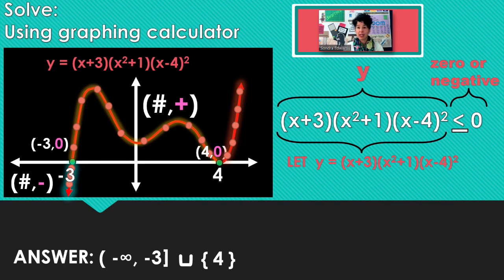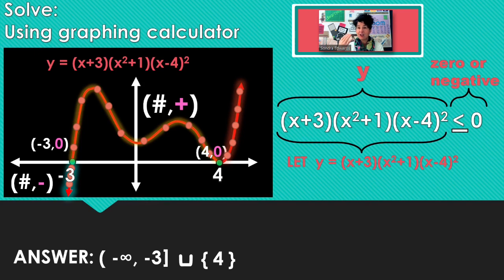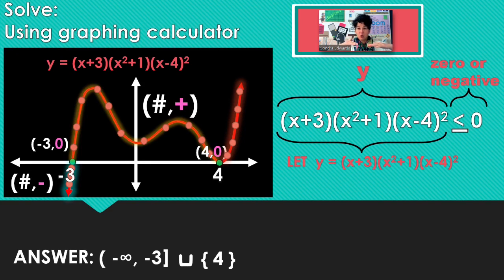So I think you guys are ready to use your graphing calculators to solve. Keep in mind that vertical asymptotes are another place where the y-coordinate can change sign. And when you're solving, with everything on one side set to 0: if you're less than 0, you're just using the x's of the coordinates where your graph is below the x-axis. If it's greater than 0, then it's the sections where the function is above the x-axis.